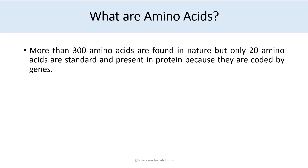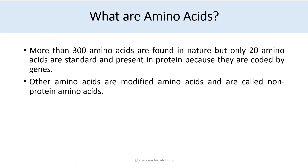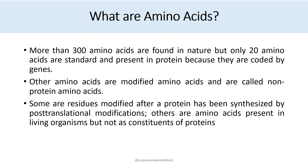More than 300 amino acids are found in nature, but only 20 amino acids are standard and present in proteins because they are coded by genes. Other amino acids are modified amino acids called non-protein amino acids. Some are residues modified after a protein has been synthesized by post-translational modification. Others are amino acids present in living organisms but not as constituents of proteins.